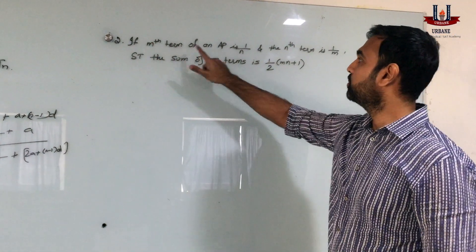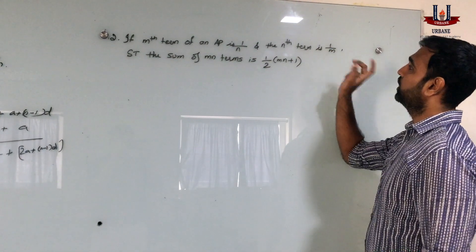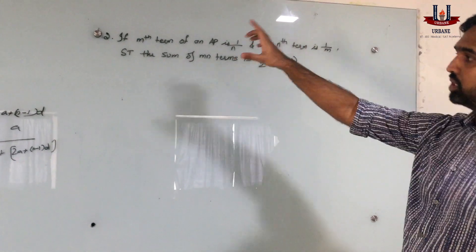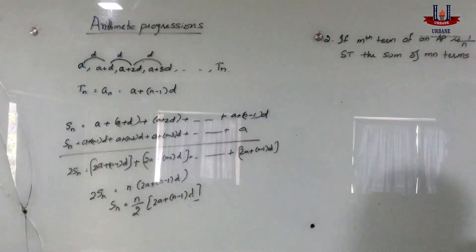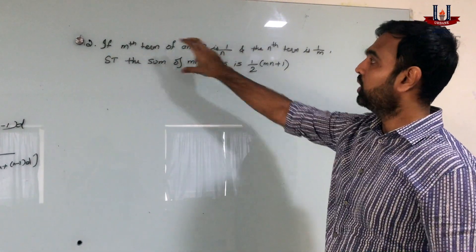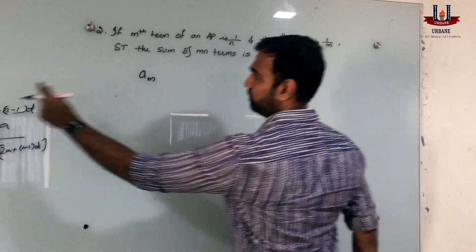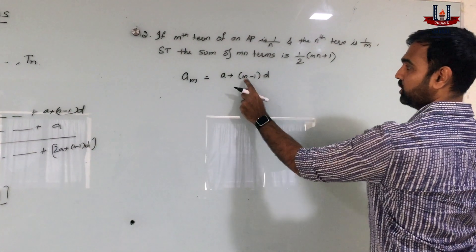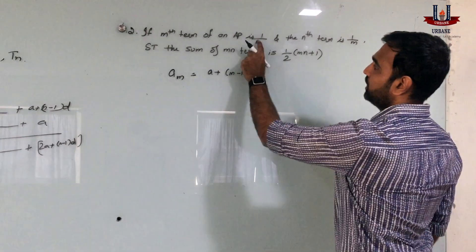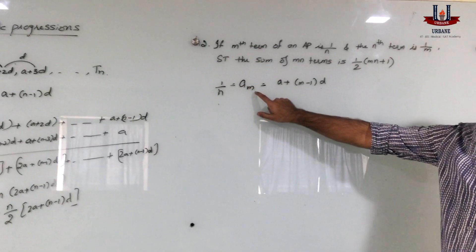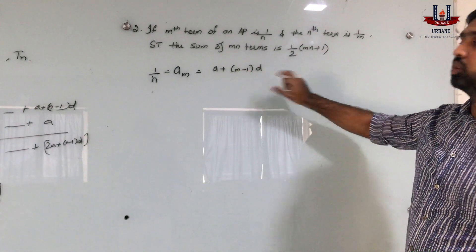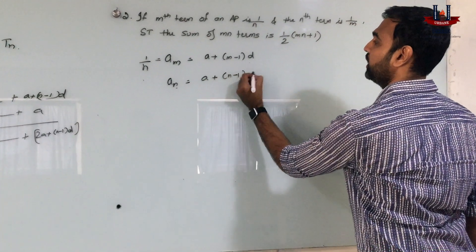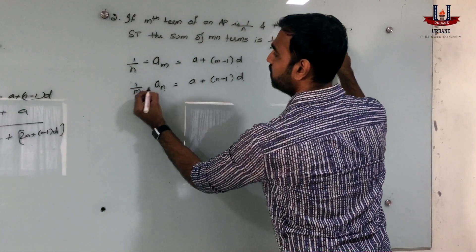This is the second question. If the mth term of an AP is 1 by n and the nth term of an AP is 1 by m, show that the sum of mn terms is half of (mn plus 1). This question uses the nth term formula as well as the sum of n terms formula. The mth term is the value at the mth position: am equals a plus (m minus 1) into d equals 1 by n. The nth term is the value at the nth position: an equals a plus (n minus 1) into d equals 1 by m.